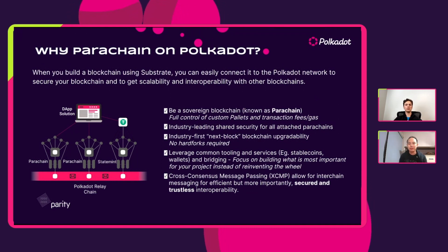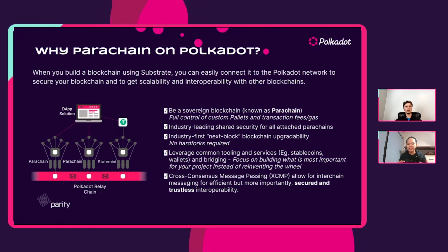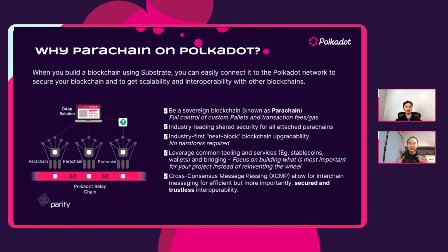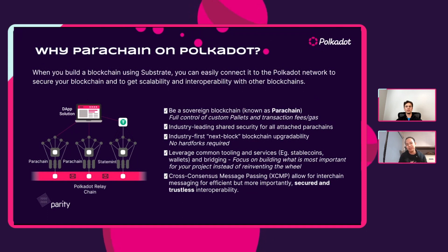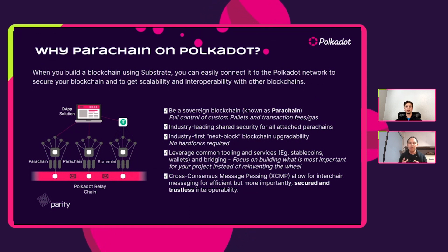All this comes together with cross-consensus message passing. What that really allows is messaging across parachains in a way that is secured and trustless for interoperability. Because each of these parachains shares the same fundamental security that Polkadot secures over the entire ecosystem, every XCMP message has the same level of security and consistency. That makes it groundbreaking in terms of its ability to create massive network effects as you build different technologies within the ecosystem.